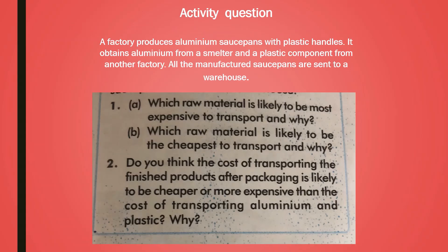Let's do the activity question. A factory produces aluminium saucepans with plastic handles. It obtains aluminium from a smelter and plastic components from another factory. All manufactured saucepans are sent to a warehouse. Question 1: Which raw material is likely to be most expensive to transport and why? Answer: bauxite, as it is very bulky. Question 2: Which raw material is likely to be cheapest to transport and why? Answer: plastic, as it is lighter. Question 3: Is the cost of transporting finished products after packaging cheaper or more expensive than transporting aluminium and plastic? Answer: the cost of transporting finished products is cheaper because we can easily organize them inside a truck in cartons — they won't take much space.